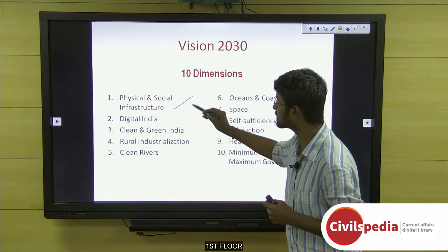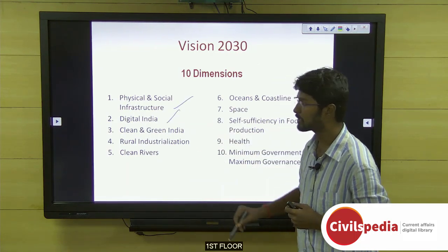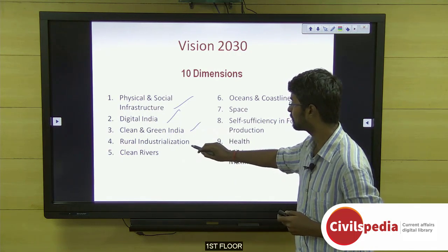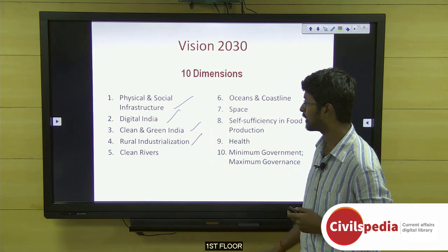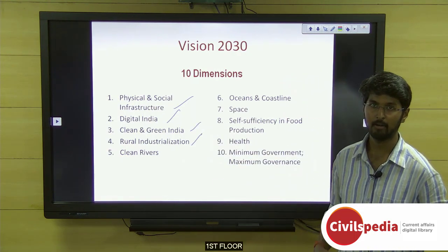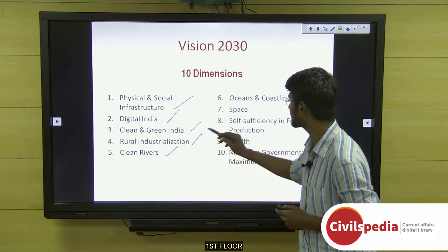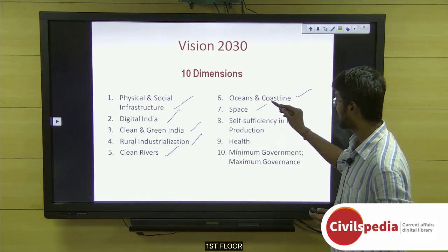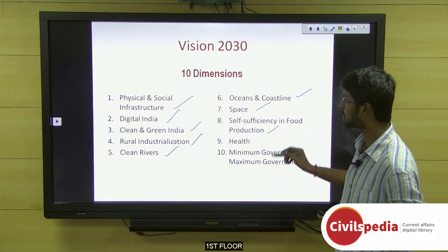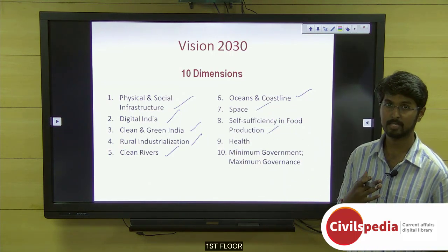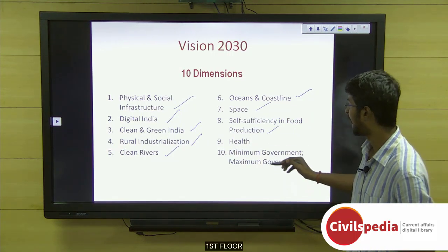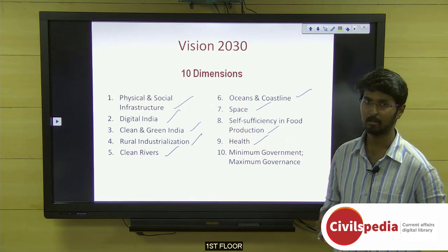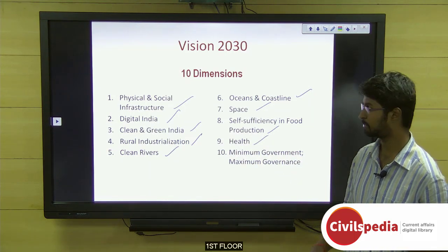The ten dimensions are: (1) physical and social infrastructure, (2) promoting Digital India, (3) clean and green India, (4) rural industrialization, (5) clean rivers, (6) oceans and coastline, (7) focus on space, (8) self-sufficiency in food production, (9) health, and (10) minimum government but maximum governance.